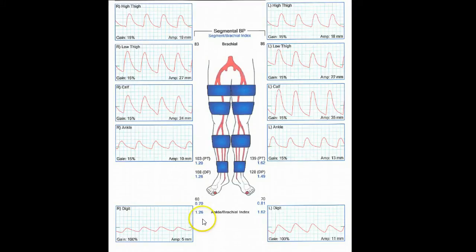Considering that all indices appear elevated on both sides, we will take a look at the brachial artery pressures, which are 86 on the left and 83 on the right. These are very low pressures in a patient with normal flow.